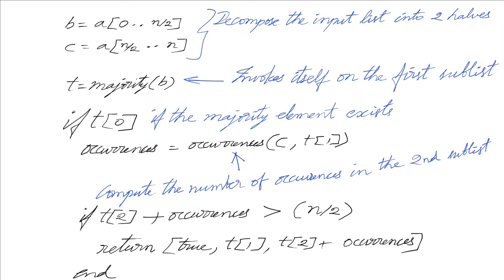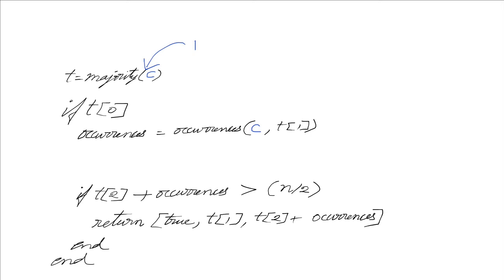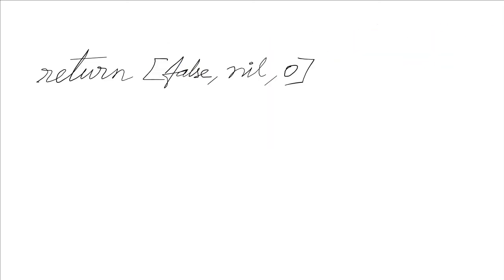Similarly, we do the same thing for the second sublist. The code is identical — the only difference is that majority element is called with C as the input, and in the occurrences call we also pass in C as the sublist. Otherwise, if we haven't returned by this point, that is the case where we did not find a majority element, so we return false as the tuple.